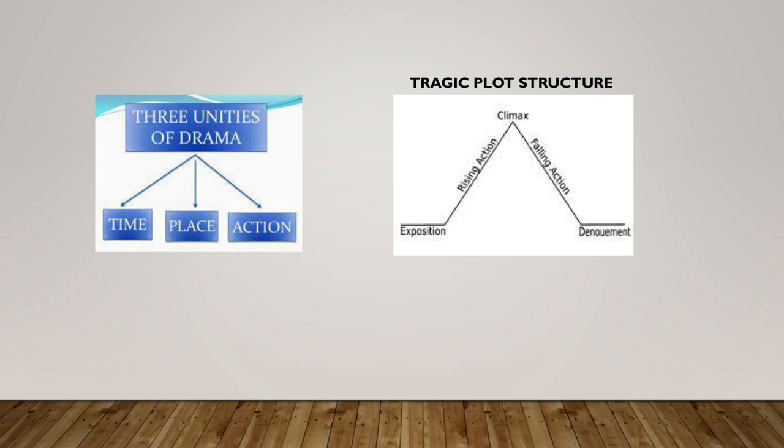According to Aristotle, tragedy should follow the three unities: unity of time, unity of place, and unity of action. There is also a plot structure to tragedy with five acts: the first act is the exposition, act two is the rising action, act three is the climax, act four is falling action, and act five is the denouement.